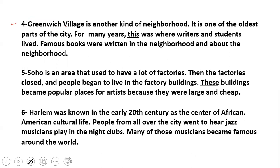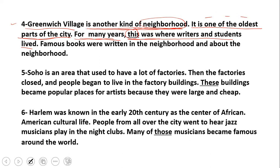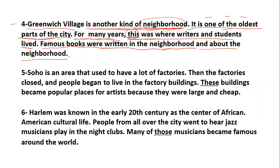Number Four. Greenwich Village is another kind of neighborhood. It is one of the oldest parts of the city, هي أقدم أجزاء تلك المدينة. For many years, للعديد من السنوات, this was where writers and students lived, هذا كان المكان اللي فيه الكتاب والطلاب يعيشون. Famous books were written in the neighborhood, كتب مشهورة كتبت في ذلك الحي, and about the neighborhood. This — it refers to what? تشير إلى ماذا? The referent is Greenwich Village.